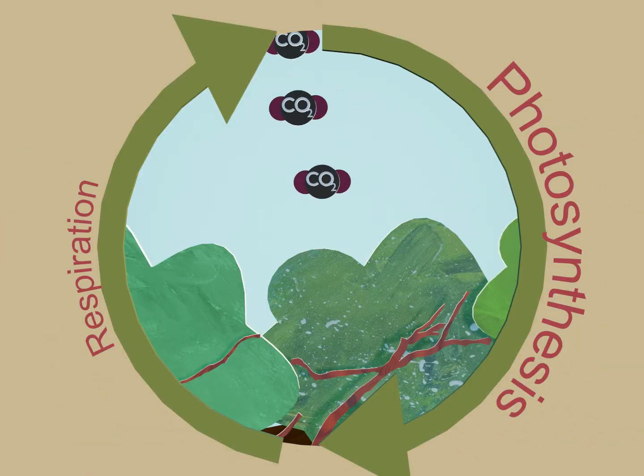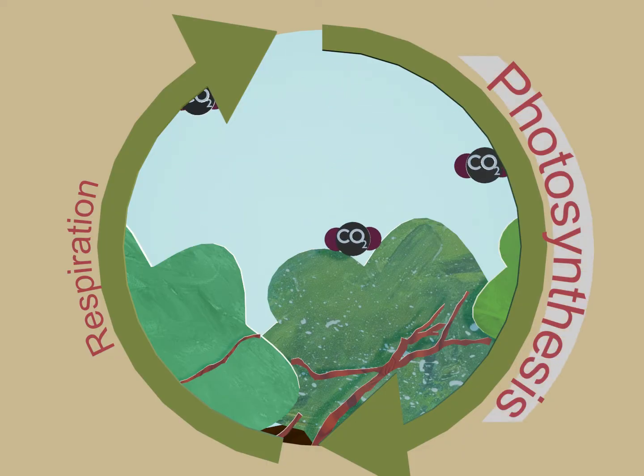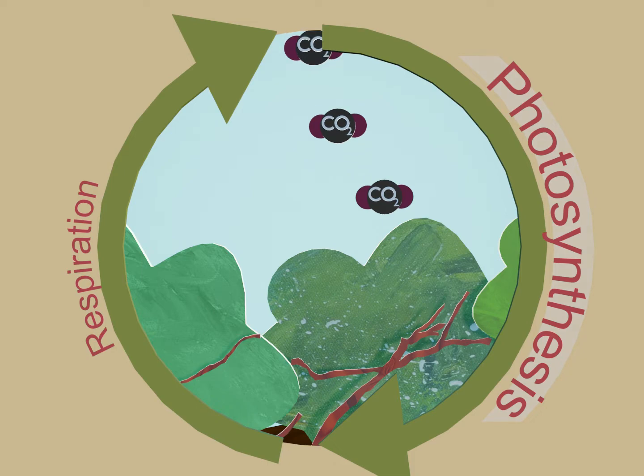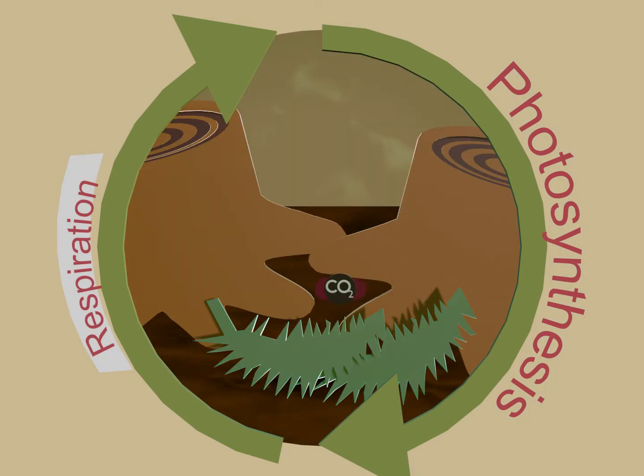Normally, carbon dioxide is absorbed as the plants in the rainforest photosynthesize or make their own food. They also release some carbon dioxide when they respire or breathe out, and when they die and decay, but in smaller amounts.